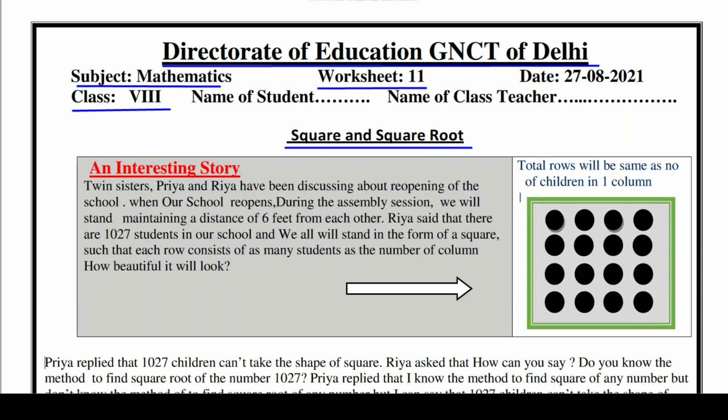So students, in today's worksheet we will not talk about squares and square roots in general, but we will definitely learn a trick through which we can find out what the unit place digit of a squared number will be. So without wasting time, let's start and understand together — here is an interesting story.